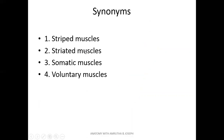The different terms used for skeletal muscles are striped muscle, striated muscle, somatic muscles, and voluntary muscles. They are striated muscles, meaning they have striations. They are somatic muscles, supplied by the somatic nervous system. They are voluntary muscles, acting according to our will, and they are also called striped muscles.